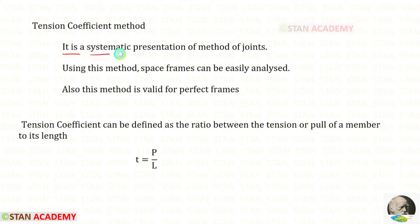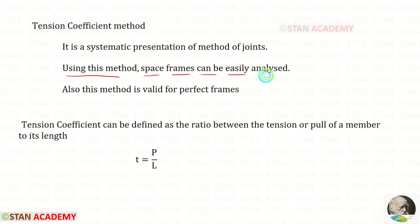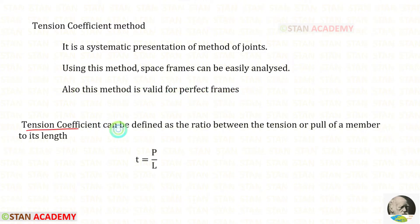The tension coefficient method is a systematic presentation of the method of joints, so if you know method of joints, doing problems using this method is very easy. Using this method, space frames and three-dimensional frames can be easily analyzed. Also, this method is valid for perfect frames. The tension coefficient is defined as the ratio between the tension or pull of a member to its length.